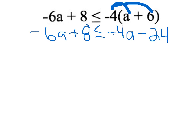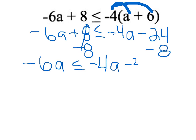Next we're going to combine the like terms. So, we're going to subtract 8 from both sides. Our problem then becomes negative 6a less than or equal to negative 4a minus 32.